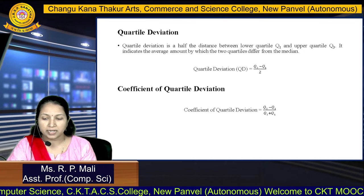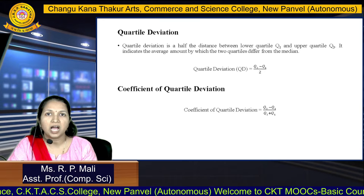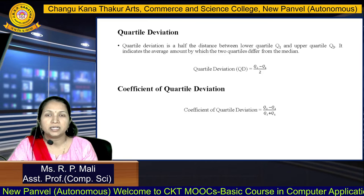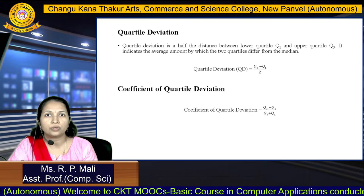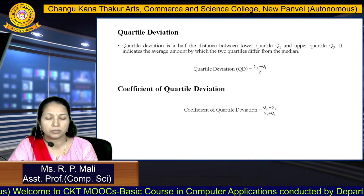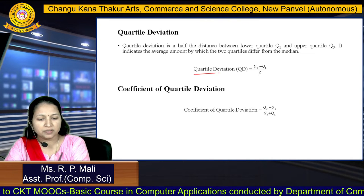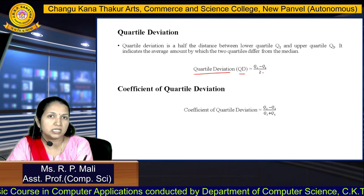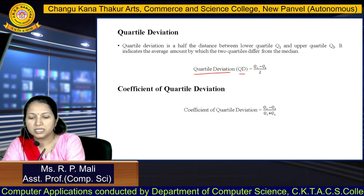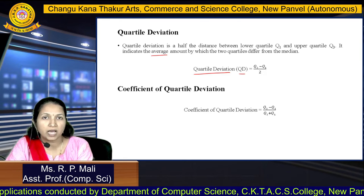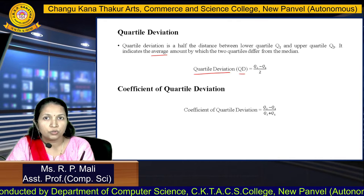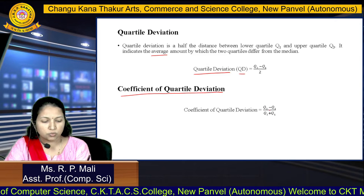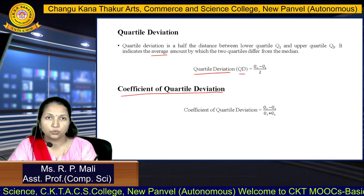Quartile deviation is the half distance between the lower quartile and the upper quartile. It indicates the average amount by which the two quartiles differ from the median. Quartile deviation is denoted by Qd and equals Q3 minus Q1 divided by 2. The coefficient of quartile deviation equals Q3 minus Q1 divided by Q3 plus Q1.